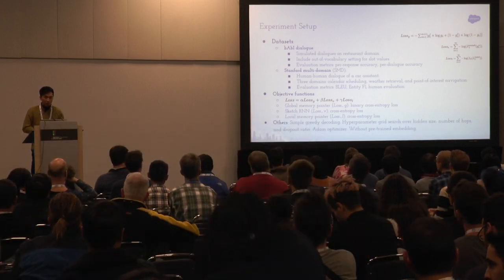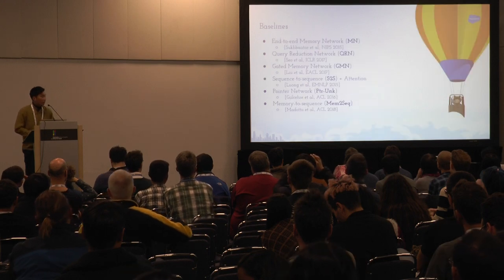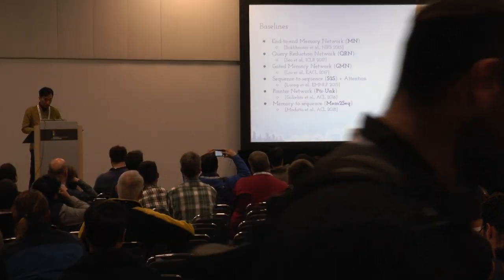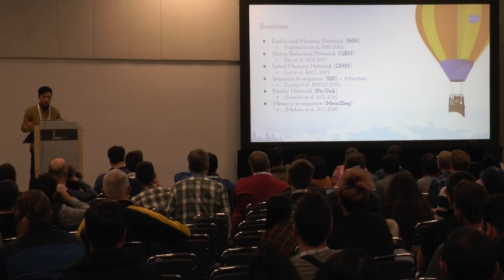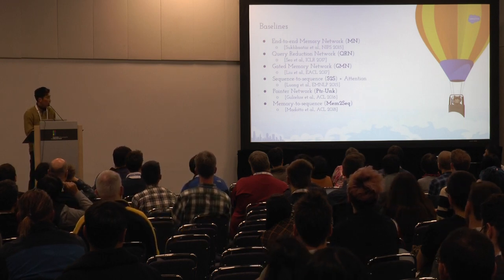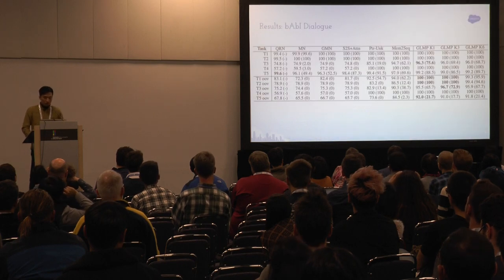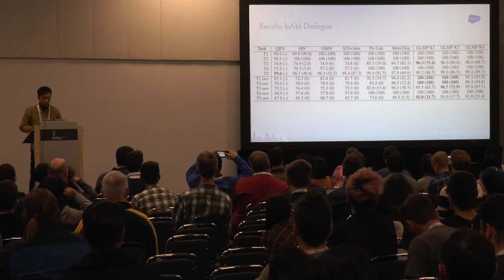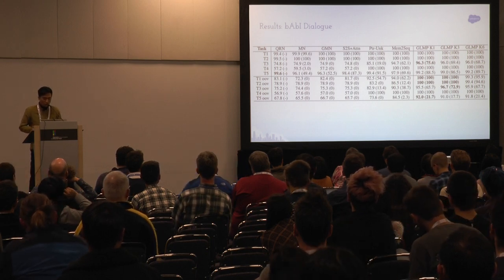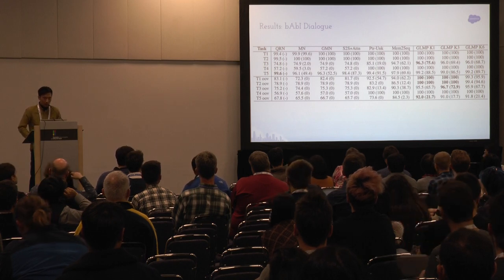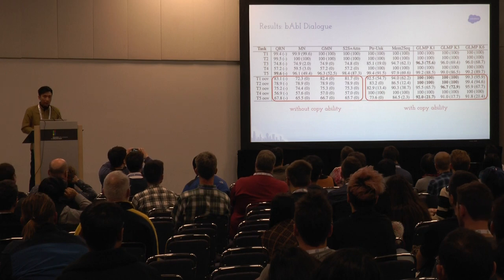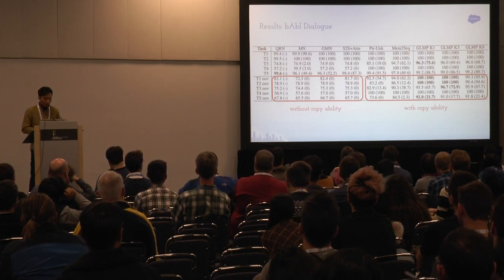Some training details: we only use greedy decoding, do hyperparameter grid search over hidden size and dropout ratio, and use the Adam optimizer. We did not use any pre-trained embeddings. Baselines include end-to-end memory networks, query reduction networks, gated memory networks, standard seq-to-seq with attention, previous pointer networks, and previous copy-augmented seq-to-seq networks. On the bAbI dialogue dataset, our GLMP model outperforms previous work across k-hop settings of one, three, and six. Generation methods work better than retrieval methods, and copyability — especially in out-of-vocabulary settings — provides much larger gains than models without copy.